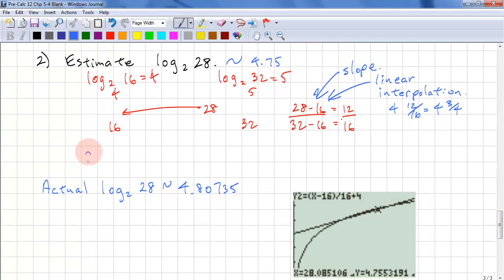Now if we do 2 to the power of 4.75, we get roughly 26.9, and that's pretty close to 28. If we look at the actual log 2 of 28, that's 4.8. Again, that's pretty close to 4.75.